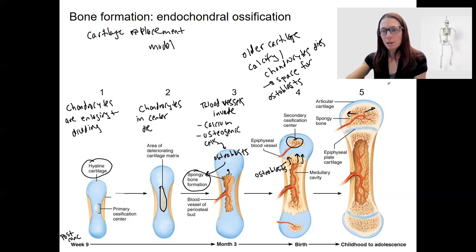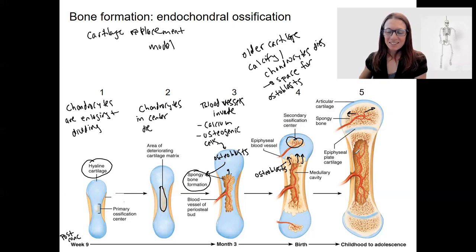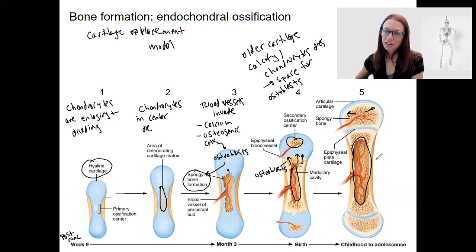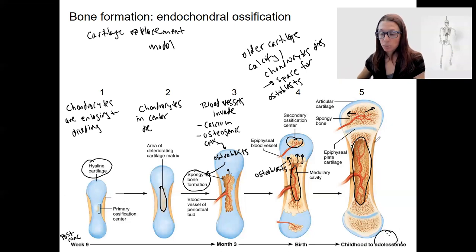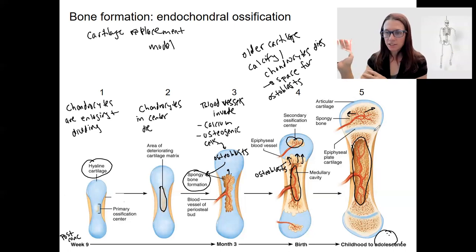So the epiphyses actually ossify separately. The other thing to notice is this hollow cavity that is beginning to form — our medullary cavity has been formed because of how the osteoblasts migrate to the ends. Then we have continued bone growth through adolescence by a very similar process: chondrocytes enlarging, dividing, and being invaded by osteoblasts.